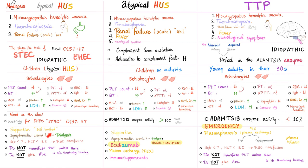Management of typical HUS: it is self-limited, so provide supportive care with fluids and electrolytes. If there is symptomatic uremia, try dialysis; if there is anemia, give red blood cells. Do not give platelets and do not give antibiotics. Atypical HUS: supportive care; dialysis for symptomatic uremia. These patients often require renal transplant due to the genetic complement problem. Eculizumab is the gold standard for atypical HUS — it is also the gold standard for paroxysmal nocturnal hemoglobinuria (PNH). Plasma exchange and immunosuppressants can also help. TTP is a medical emergency — start plasmapheresis with plasma exchange using FFP or cryosupernatant. Do not give cryoprecipitate because it contains von Willebrand factors, which worsen platelet microthrombi. Do not give platelets or antibiotics.